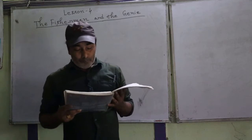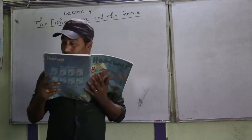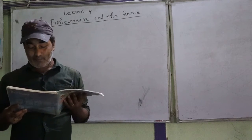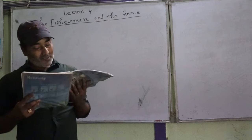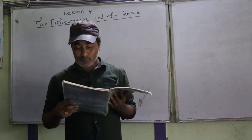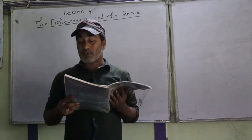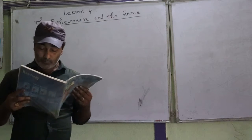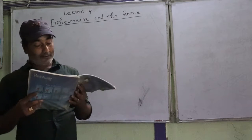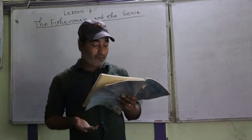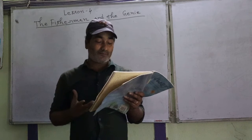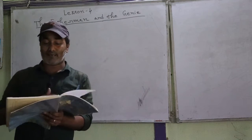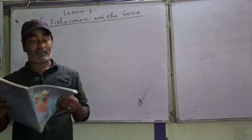What he did again — the fisherman tried a third time. He threw the net into the sea, and this time also it was very heavy. But when he drew it in, he found that there were only shells, stones, and mud. So again the fisherman became very sad.